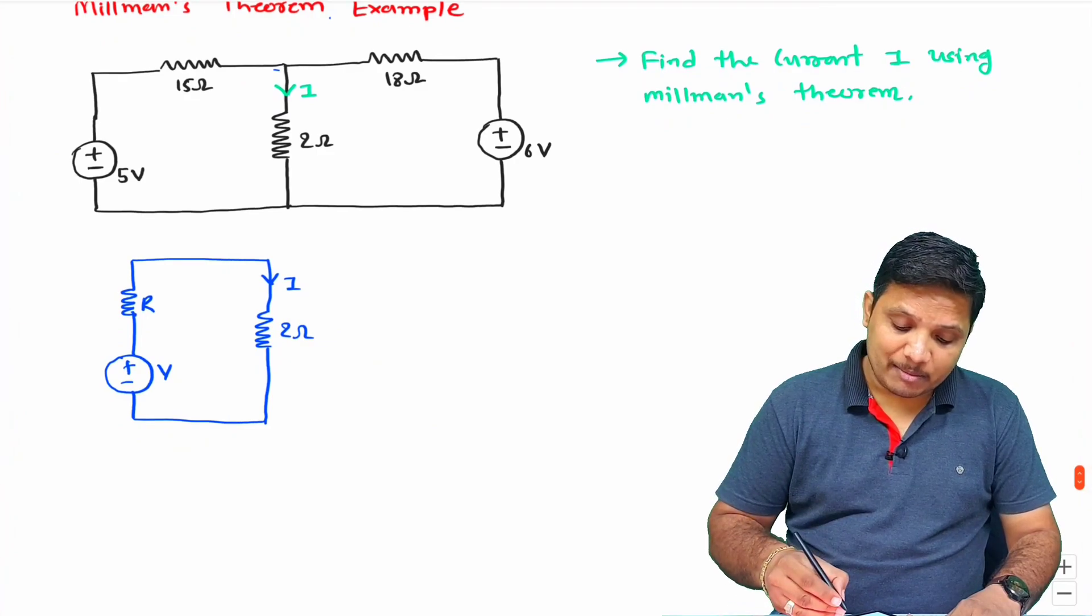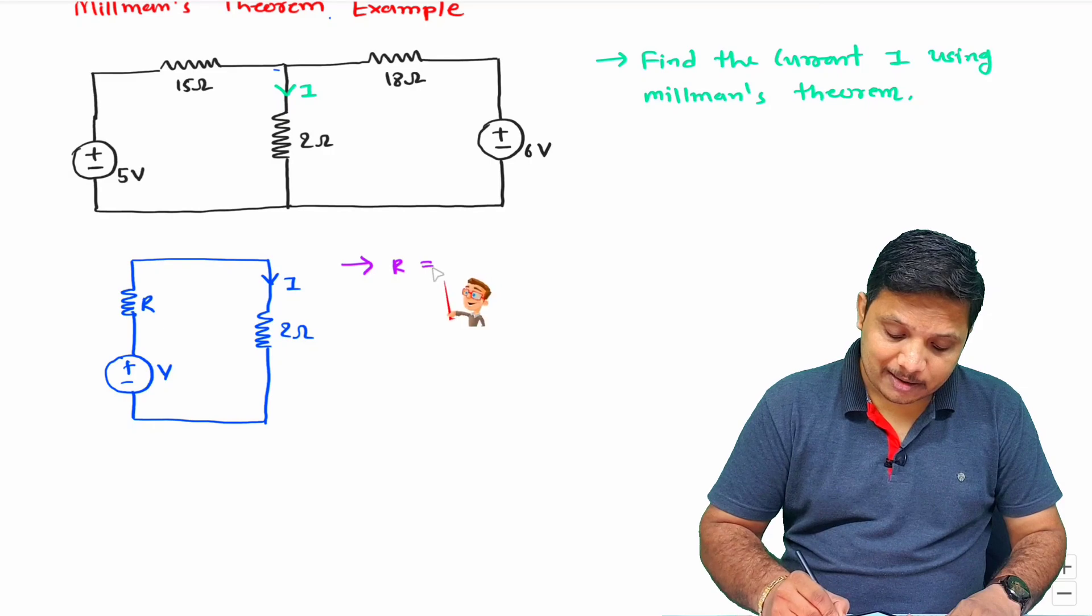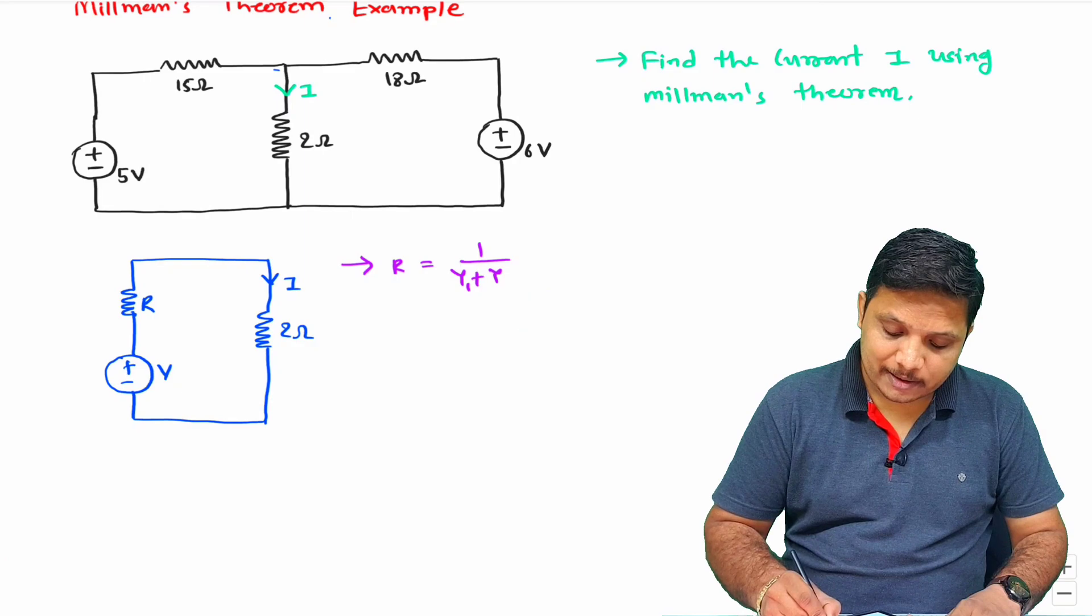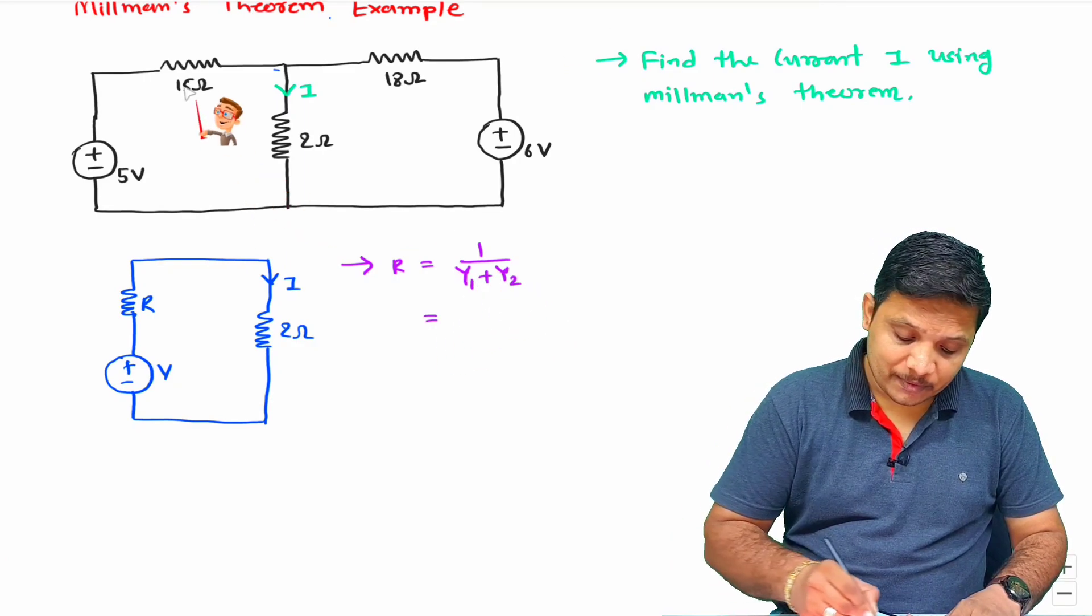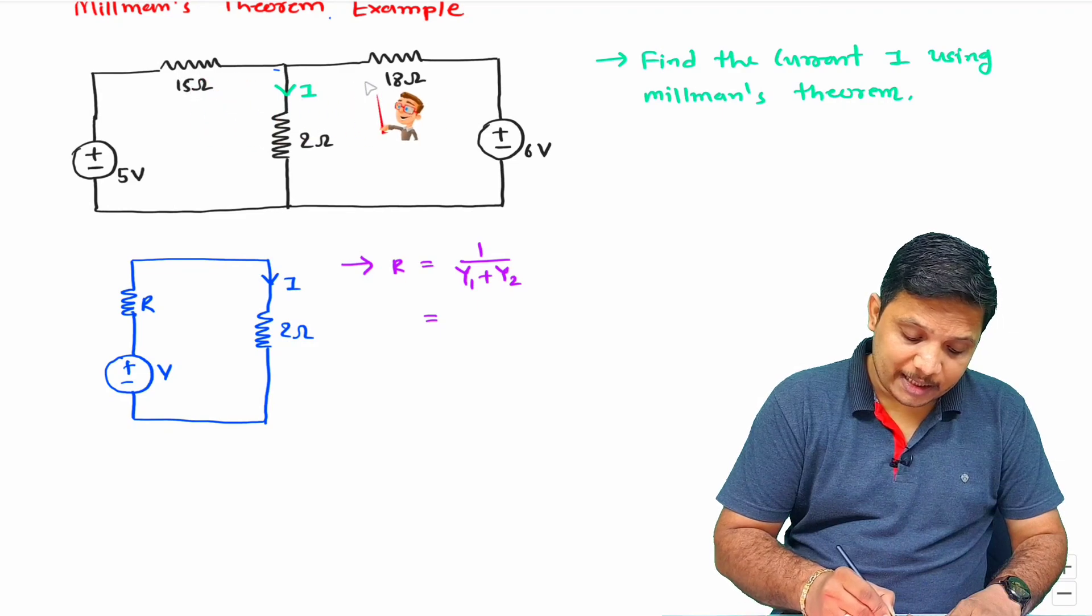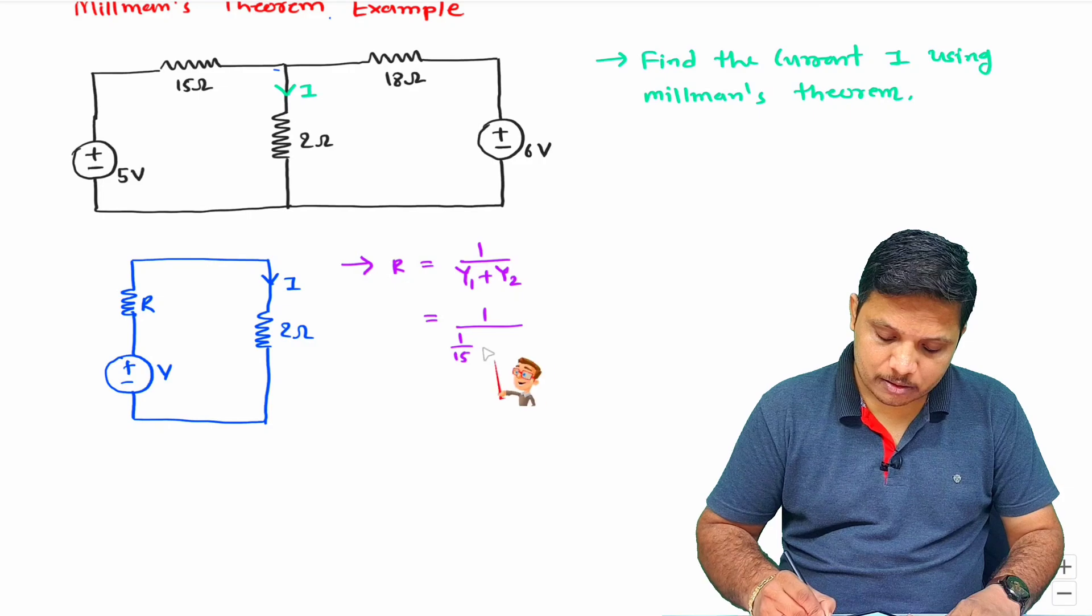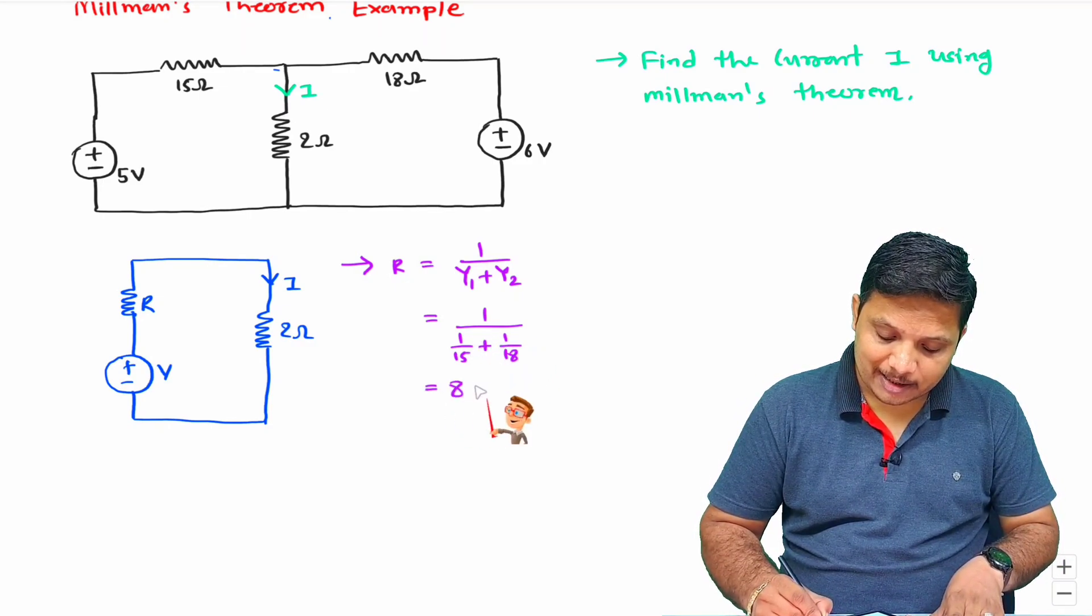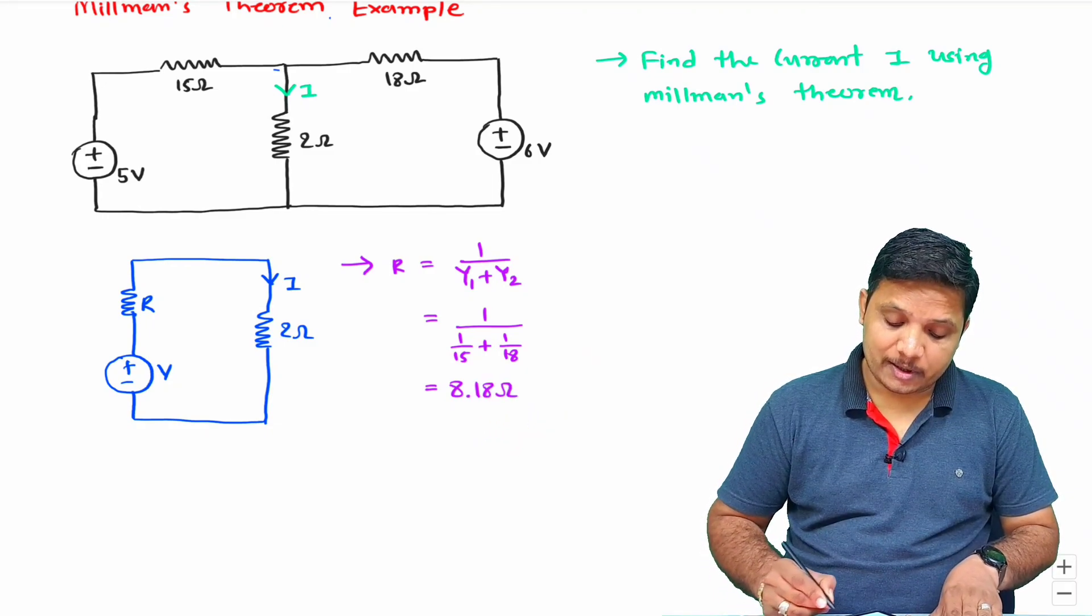So as per Millman's theorem, value of R is 1 by Y1 plus Y2. Here Y1 is 1 by 15 and Y2 is 1 by 18. If you solve this, you will get R equals 8.18 ohm.